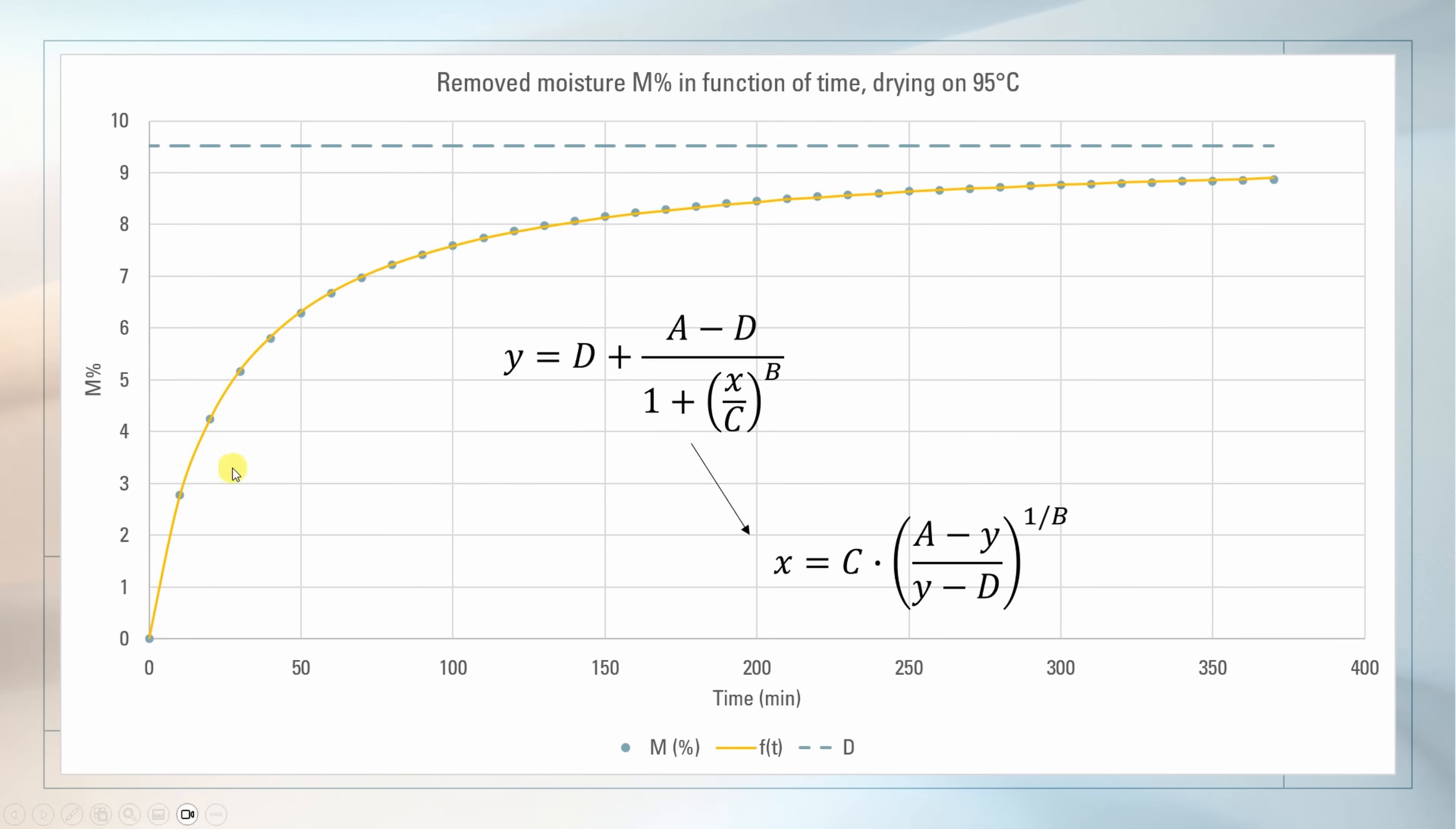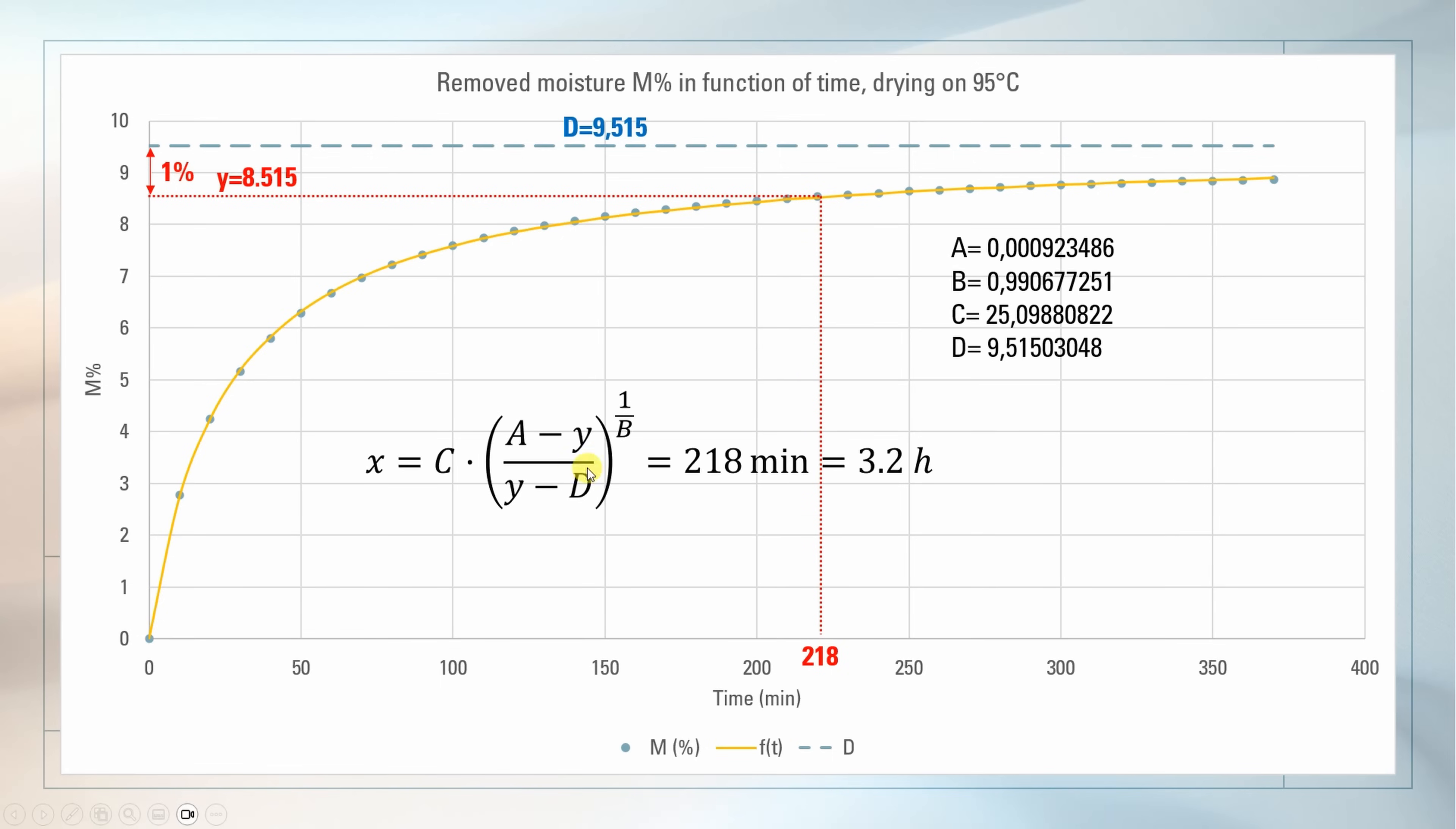Now, let's use this equation. Actually, with this yellow, you can see how good this equation aligns to our measured points. And from this equation, if we express the X, in this case, we can calculate the time for any of these points. But what point? Let's say we want to have only 1% of the moisture in our filament. Well, in this case, the Y is 8.5 now. And even using the graph, we can see that the minutes will be approximately 220 or something like that. But this can also be calculated using this equation, if we use this as a Y value here.